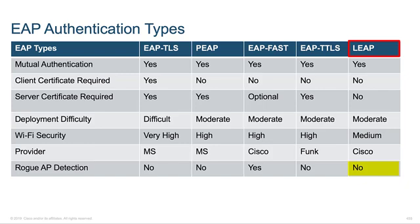Which EAP type is best? The engineering answer is: it depends — on how much time, effort, and expertise you have to implement it. EAP-TLS is the most difficult but offers the highest security level. Any approach to security should be like layers of an onion — you shouldn't be dependent on any single technology. It's going to be several different technologies all working together to provide security for your enterprise.